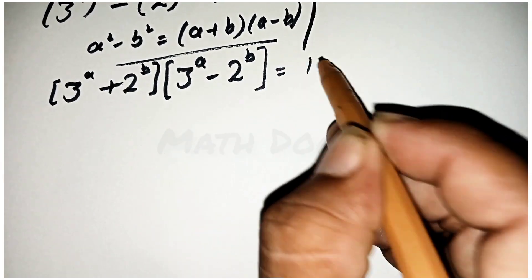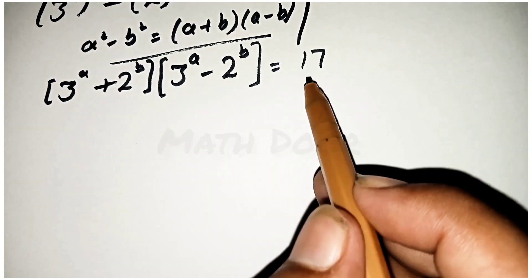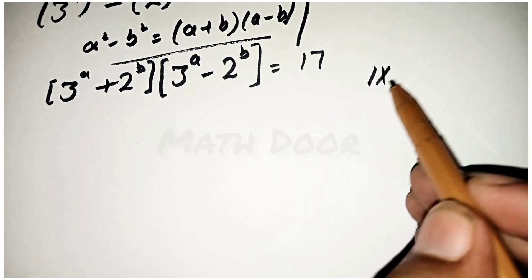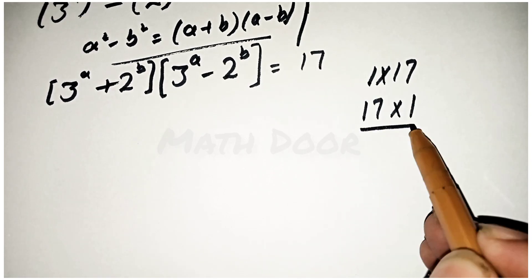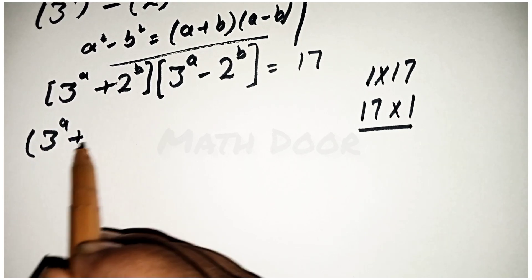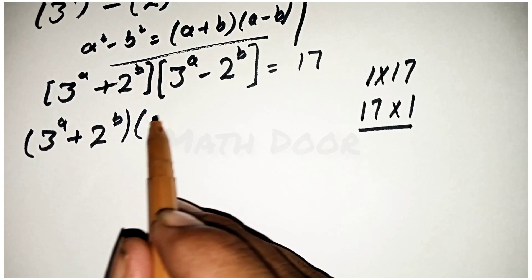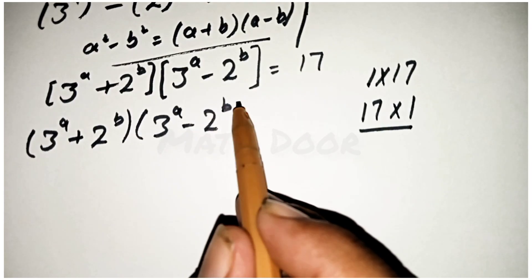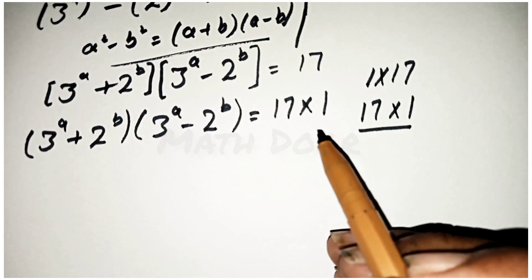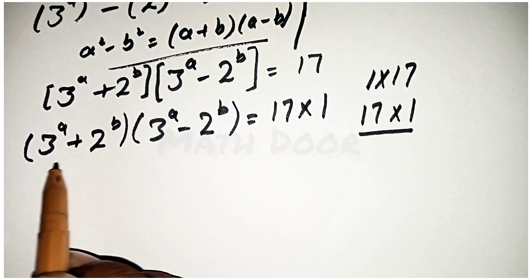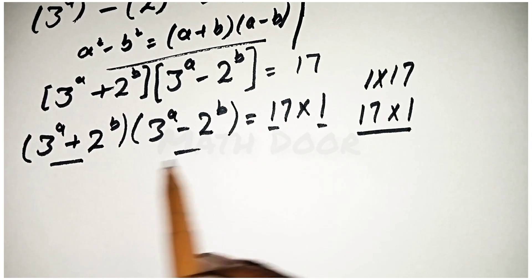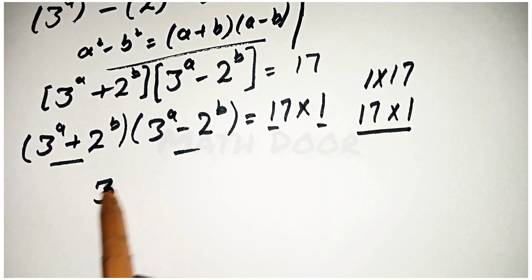Now 17 is a prime number, which means it has two factors: one is 1 cross 17, and another is 17 cross 1. We take this one, so we write brackets 3 power a plus 2 power b, brackets 3 power a minus 2 power b, is equal to 17, and this one is equal to 17 and this one is equal to 1, because the first factor is greater.